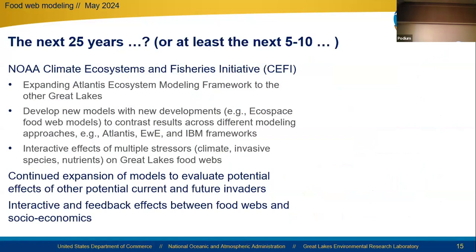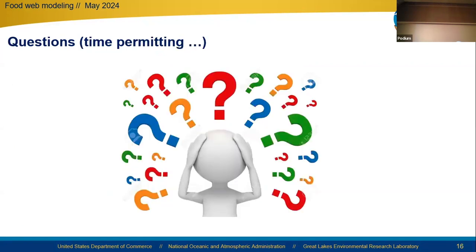So, what's happening in the next 25 years, or at least the next five to ten? We have our NOAA Climate Ecosystem and Fisheries Initiative — CEFI — where we will continue to develop the Atlantis Ecosystem Modeling framework for Lake Michigan and expand it to the other Great Lakes. We will develop new models, for example ecospace food web modeling, to contrast results across different modeling approaches, and further address the interacting effects of climate with other multiple stressors on Great Lakes food webs. We'll continue expansion of models to evaluate potential effects of future invaders, and continue our developments of interactive and feedback effects between food web and social-economic models. Thank you for listening — Ed Rutherford is available to address any questions.